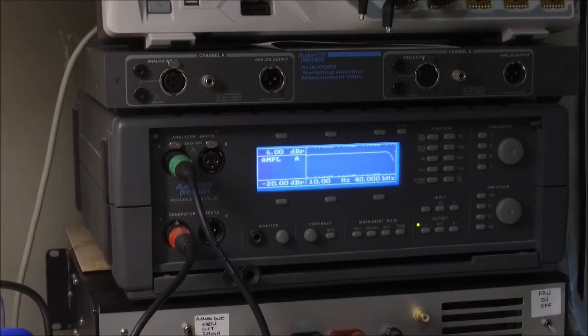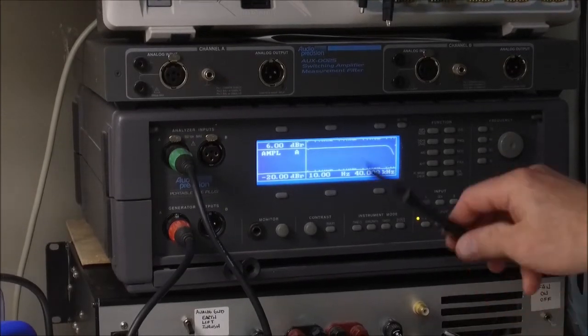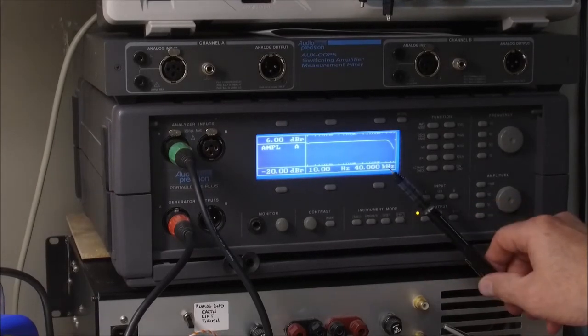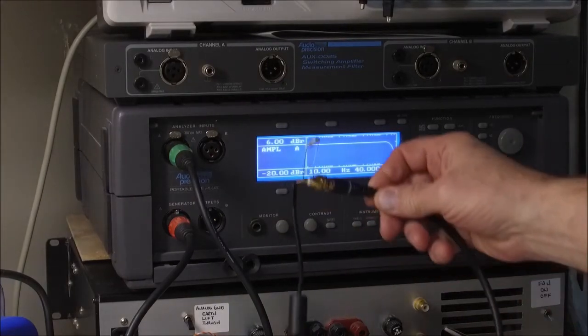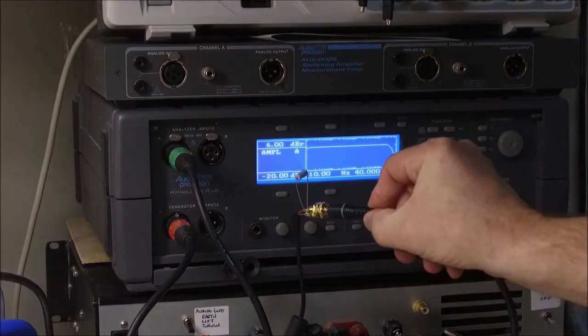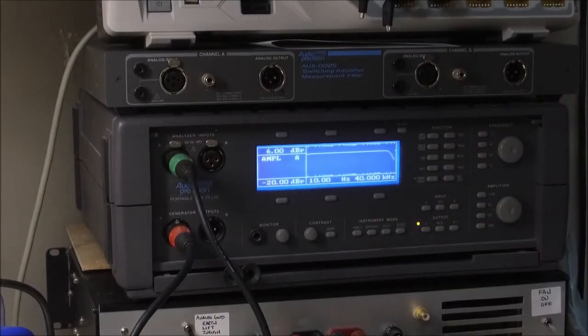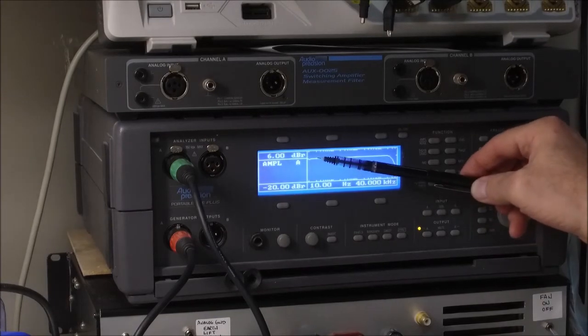So this might be a little hard to see, but the audio precision analyzer is set up to run from 10 Hertz to 40 kilohertz, and I'm driving this into a resistor load here that's 47 ohms. And this is the result. And you can see this is ruler flat.